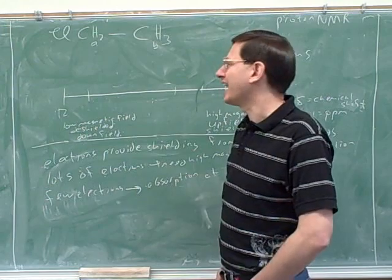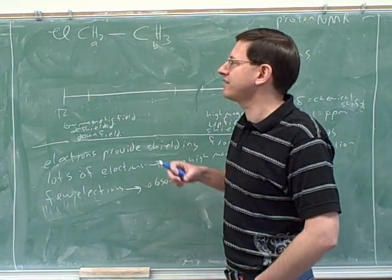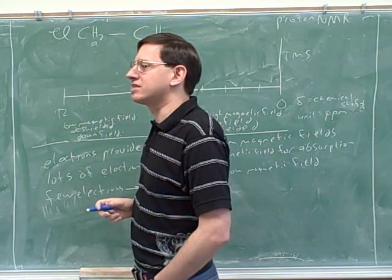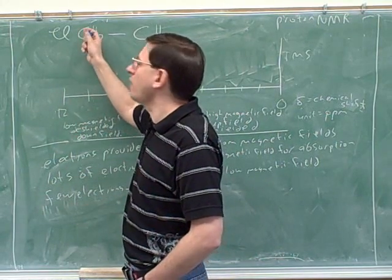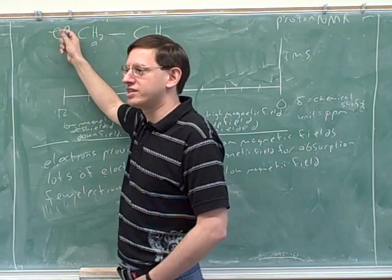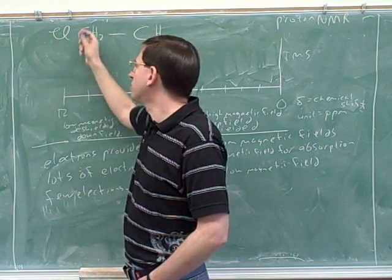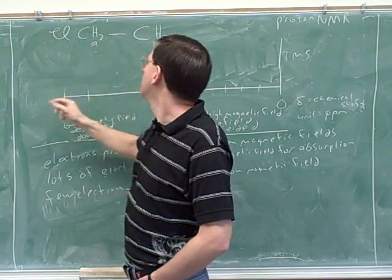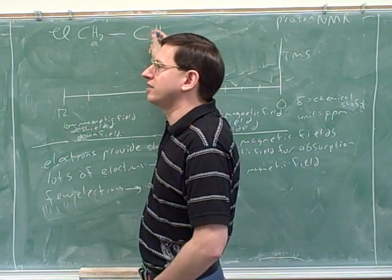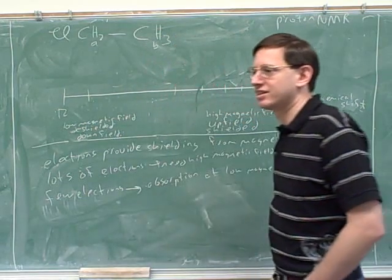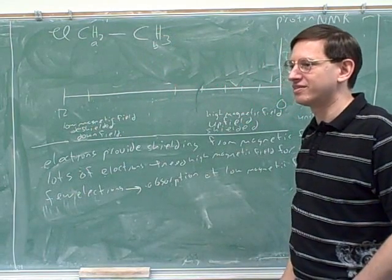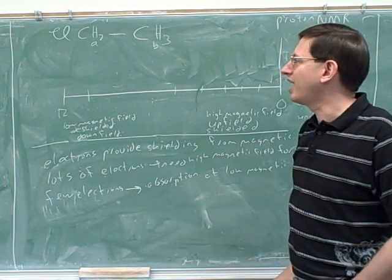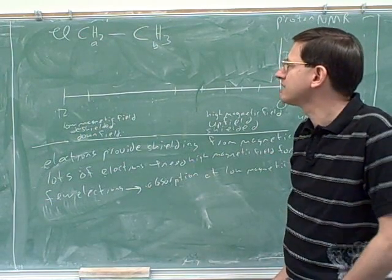A has more electrons? I can see why you'd think that — you're probably thinking the chlorine is pulling electrons towards itself. But what you should think is that the chlorine is pulling electrons away from the nearby hydrogens and towards itself. So electrons that would normally be around those hydrogens have been pulled over to the chlorine. The other CH group is so far from the chlorine that it has very little effect.